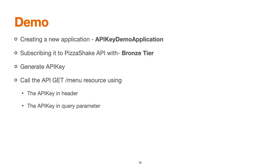Now we'll go through a live demo where we'll create a new application, subscribe it to a business API, generate the key, and call the API resource using the API key in both the header and the query parameter.